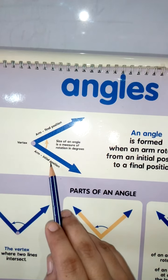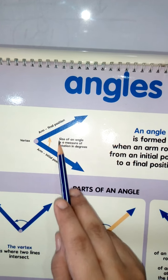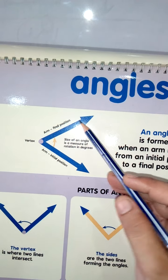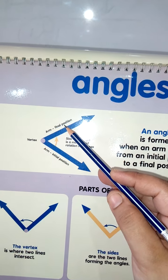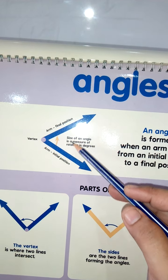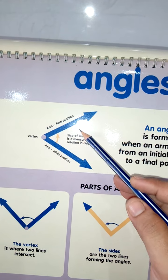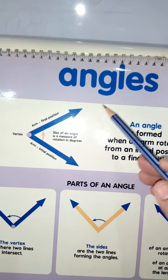First of all, this was my initial position and when I started moving the second arm, this will be my second position, final position. And the distance created between these two arms is known as an angle.